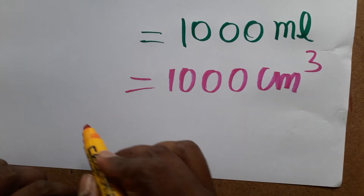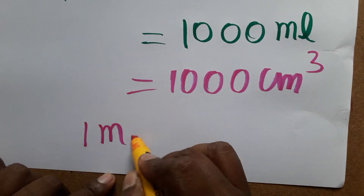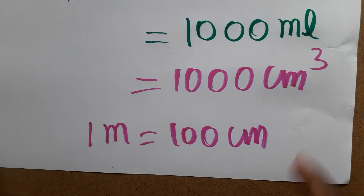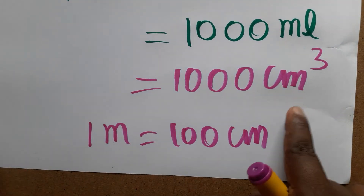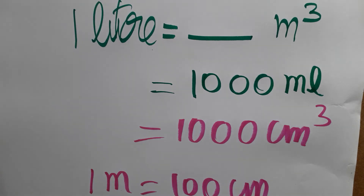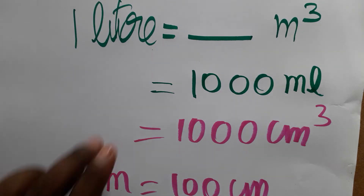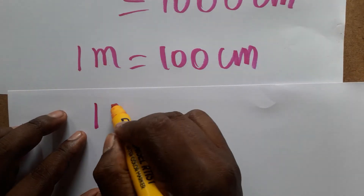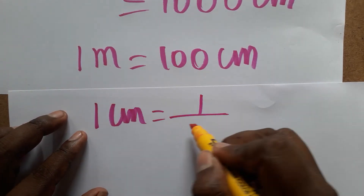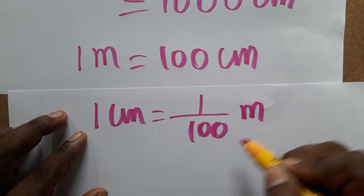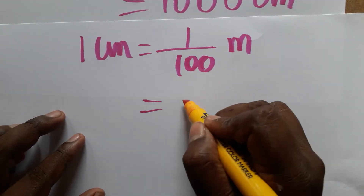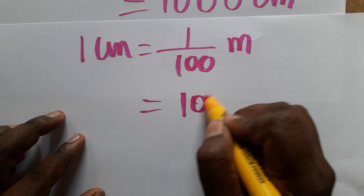Now, one meter is equal to one hundred centimeters. We need to find what one centimeter is in meters, so that we can calculate one liter in meter cube. One centimeter is equal to one divided by one hundred meter, which is 10 power minus 2 meter.